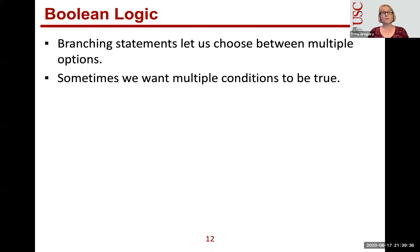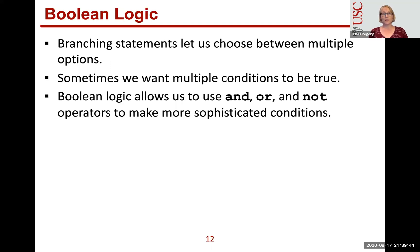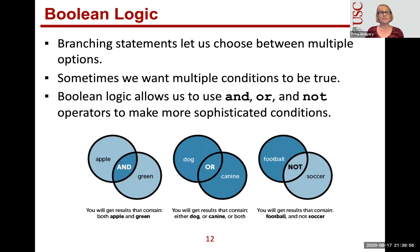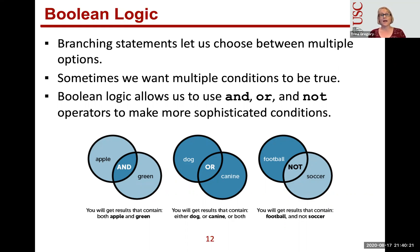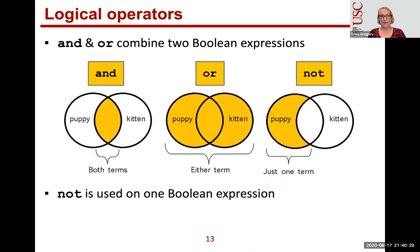Sometimes we want multiple conditions to be true at once — this is called Boolean logic. We use the reserved words `and`, `or`, and `not`. An `and` means both conditions have to be true for the result to be true. An `or` means either condition needs to be true. `not` applies to one expression and inverts it — for example, 'football but not soccer'.